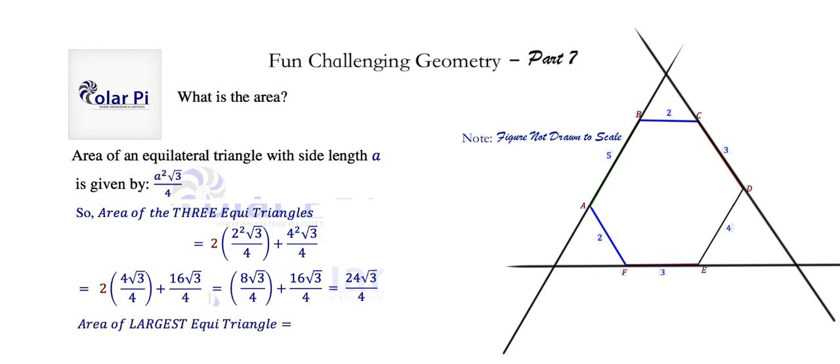Now, the area of the largest equilateral triangle, notice the largest equilateral triangle has a side length of 9, because 2, 5, and 2 make 9, and you can count it any other way. You get 9 either way. So because one of its sides is 9, its area, the largest equilateral triangle is 9 squared root 3 over 4, which is 81 root 3 over 4.